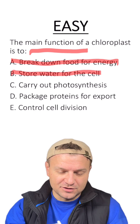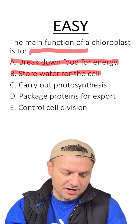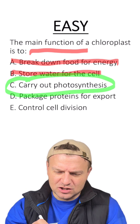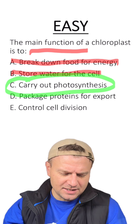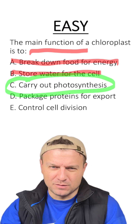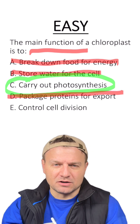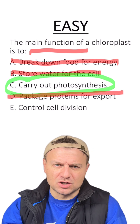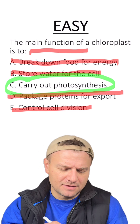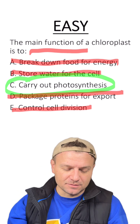C, carry out photosynthesis. This is the right answer here. Let's check D and E just to make sure. D, package proteins for export — that would be like the Golgi body, that's out. And then E, control cell division — that would be the job of the nucleus, not it. That is why C is the correct answer.